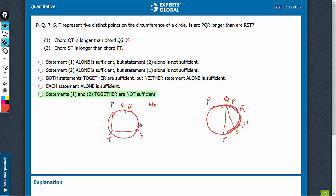But if Q and R are somewhere here, PQR will be much bigger and RST will be smaller. If S comes here and R comes here, RST is much smaller and PQR would be much bigger. So again, yes and no both are possible. Statement two is not sufficient.